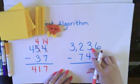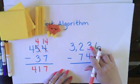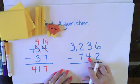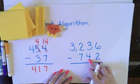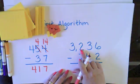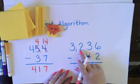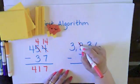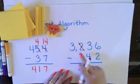Now I need to move to my 10s place. I see I have 3 10s and I want to take away 4 10s. Can I do it? I can't. So I need to go to my 100s place. I need to trade 1 of my 100s.